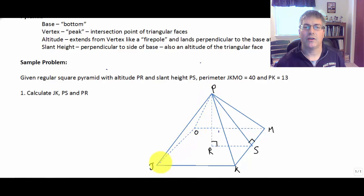And the altitude, the altitude is going to be PR, the altitude of the pyramid. It extends like a fire pole from the vertex, from our vertex, down to the center. So PR is our altitude.